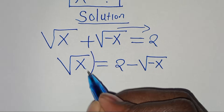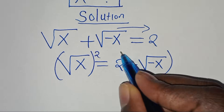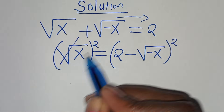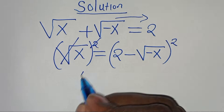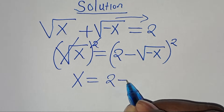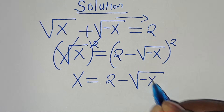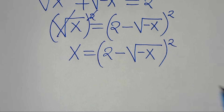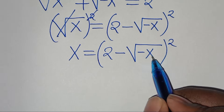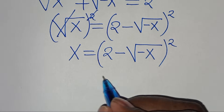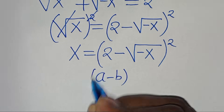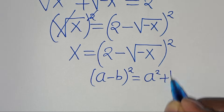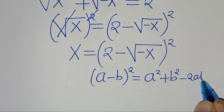The next step is to square on both sides, so that now the square root of x simplifies, giving us x is equal to 2 minus square root of minus x, raised to the power of 2. Now this expression is in the form of (a minus b) raised to the power of 2, which we can express as a squared plus b squared minus 2ab.